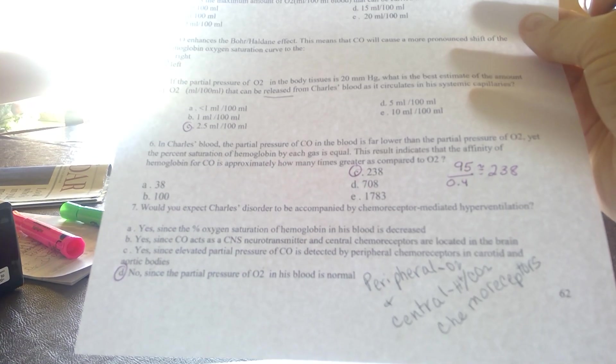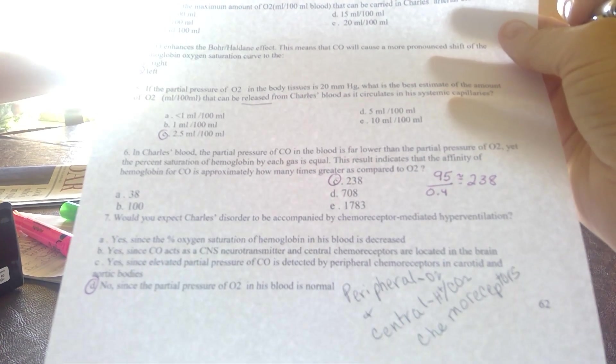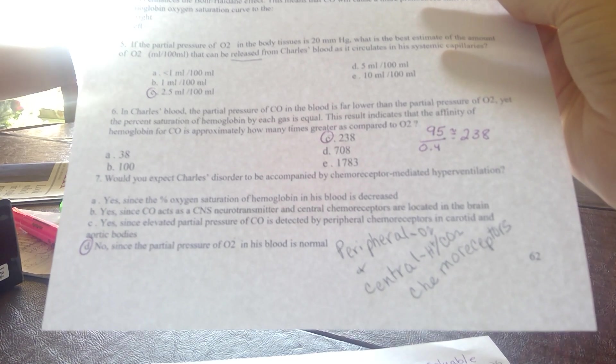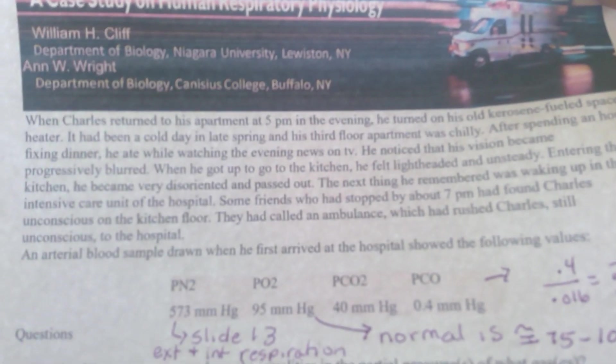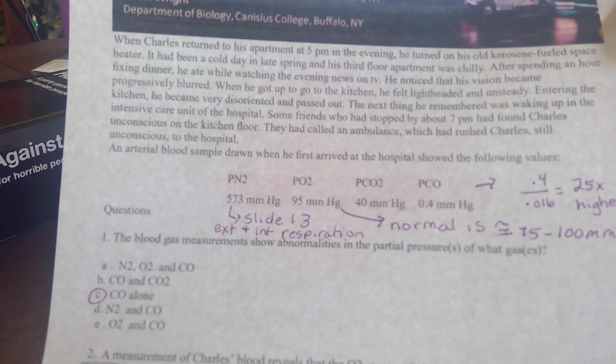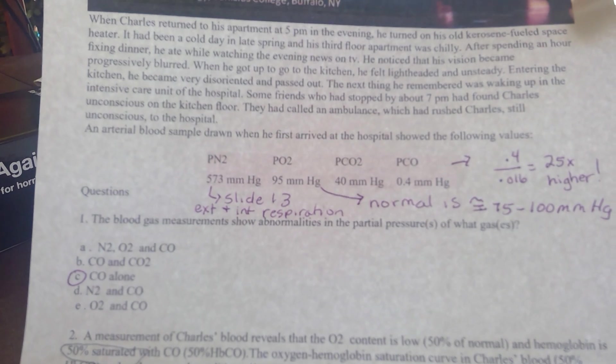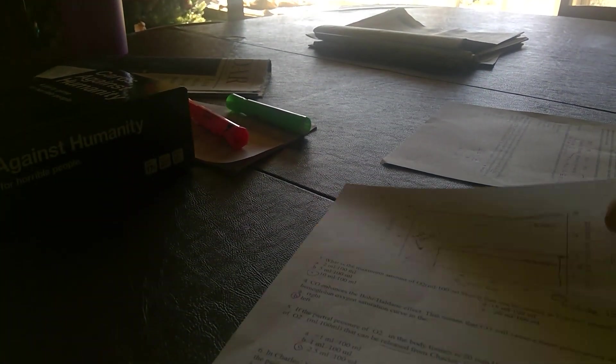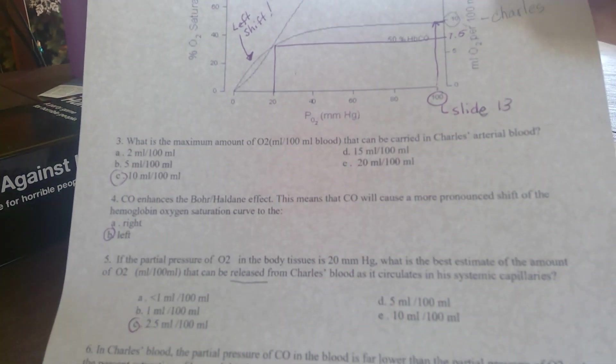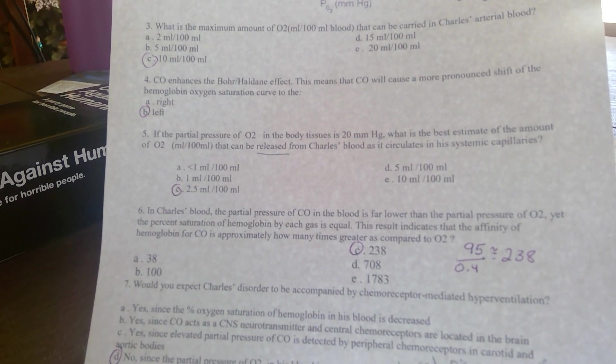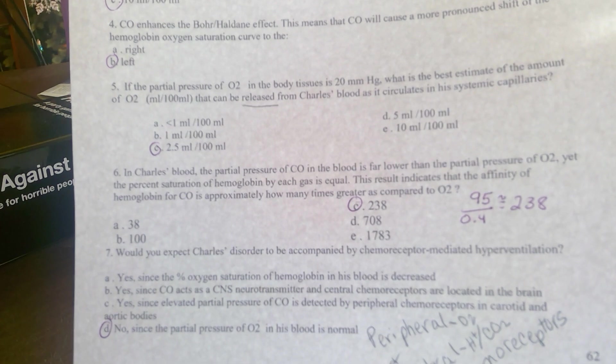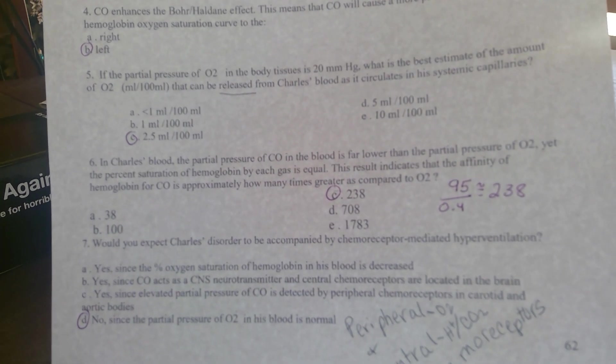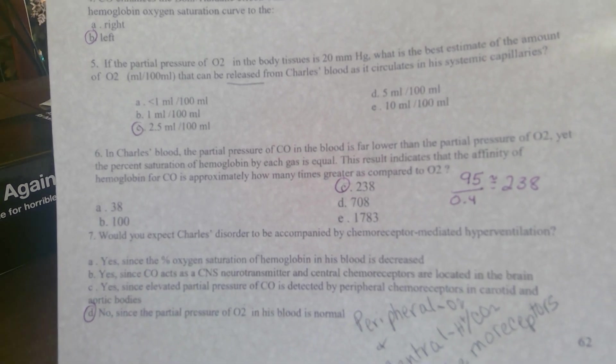The next question asks us to compare the affinity and solubility of carbon monoxide compared to oxygen. If I go back to Charles's original values, his PCO was 0.4 and his oxygen was 95. If I divide 95 by 0.4, I get 238. So carbon monoxide has a solubility and affinity of 238 times more than oxygen.